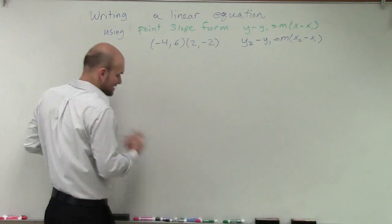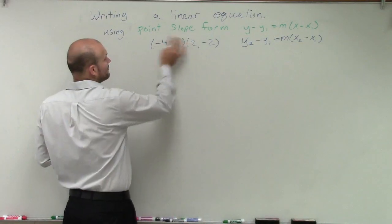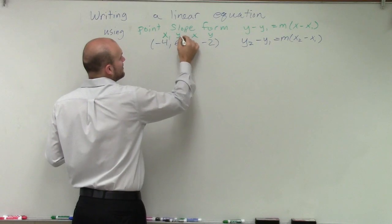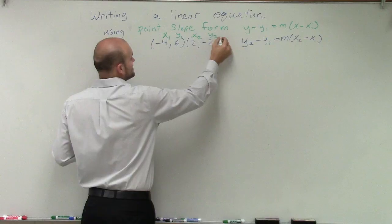We could also just look at this and say, all right, well, I want to label these. Whenever we have two points, I know that these are both x and y coordinates, and I'm going to label them x1, y1, and x2, y2.